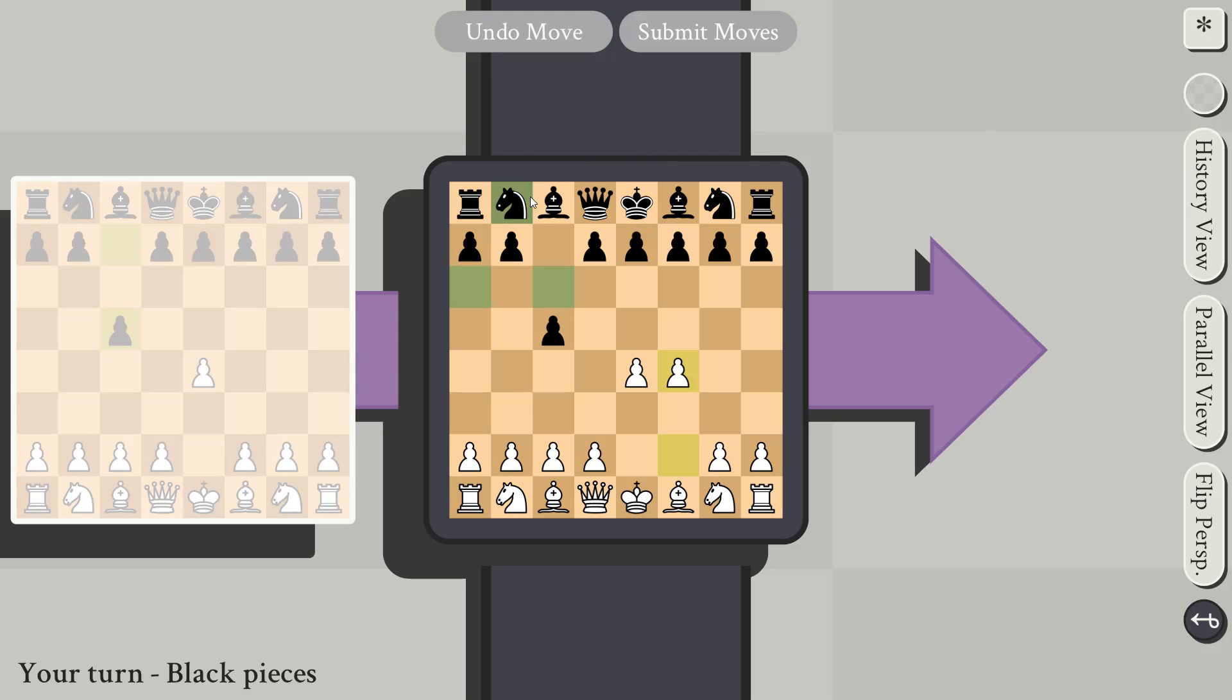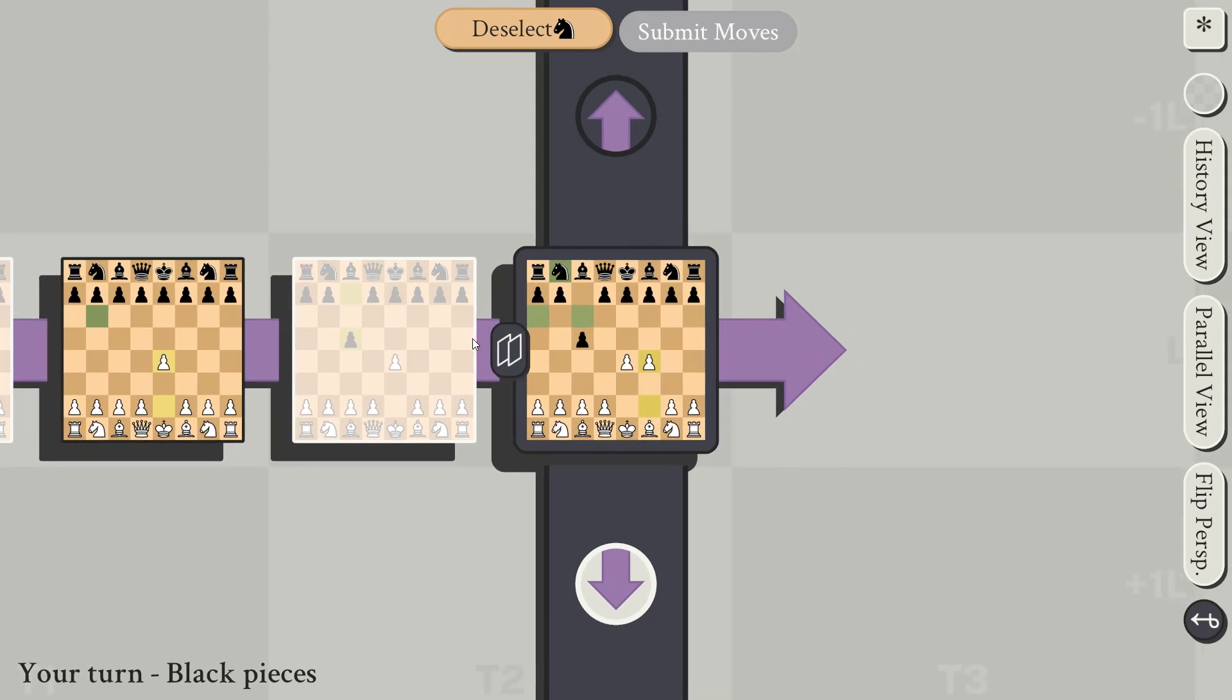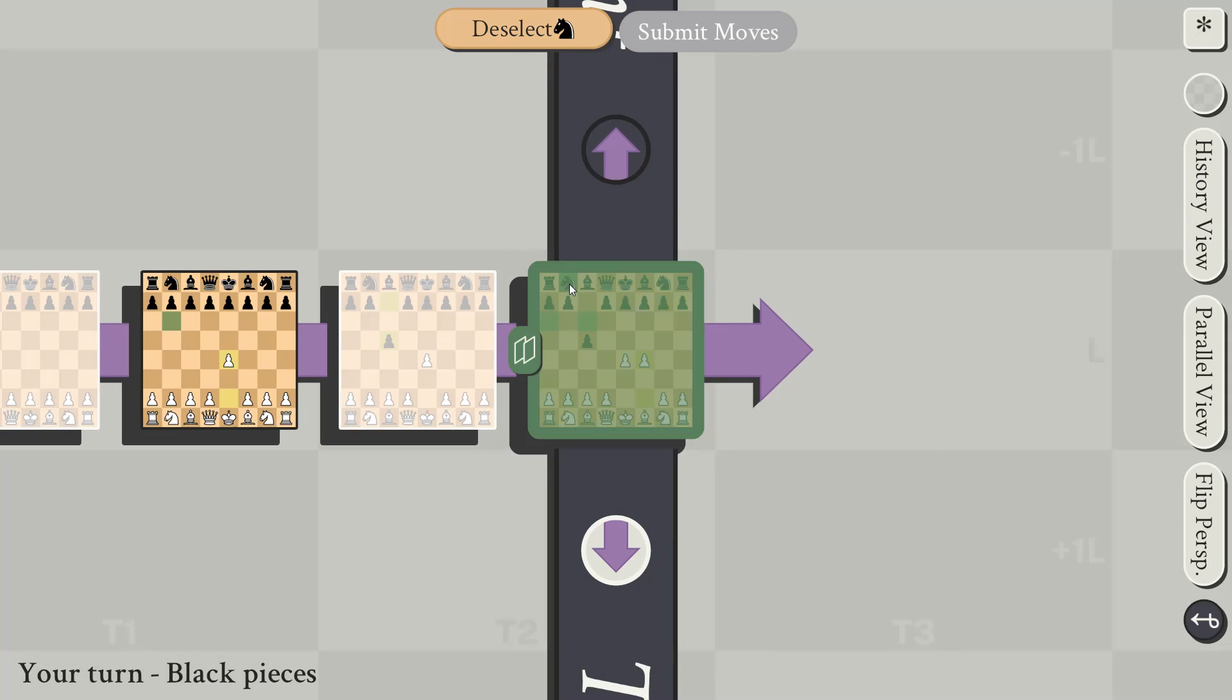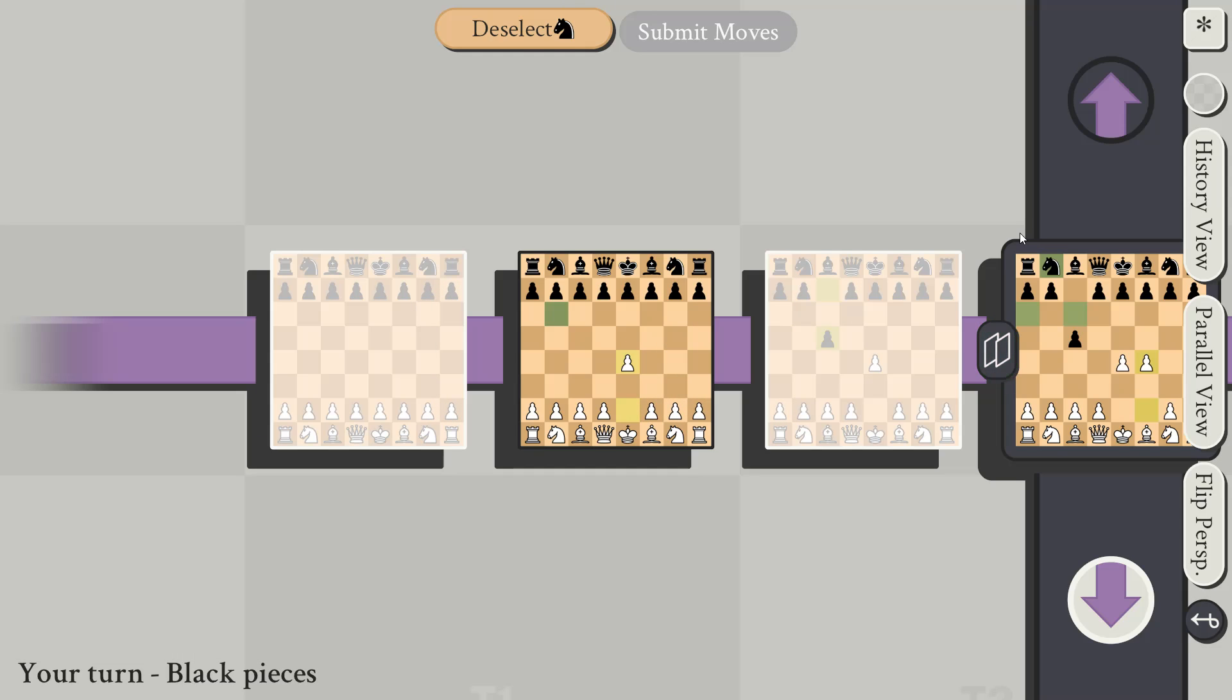If you select a piece, and it has this icon shown, that means that it can move between boards. If we scroll out, you can see what boards it can move on. We can see this knight can move on to this green space in this board. Remember that a knight moves one in one dimension, and two in another dimension.